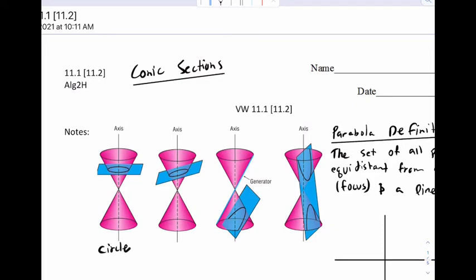That is a circle which we've studied already. If you cut it at a slight angle here, that's what's called an ellipse. If you cut it just right here, this is a parabola.